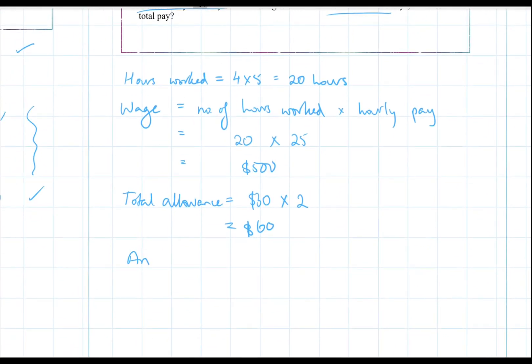So Angel's total pay is going to be the wage and the allowance added up, which is $500 plus $60. And that's going to be $560.